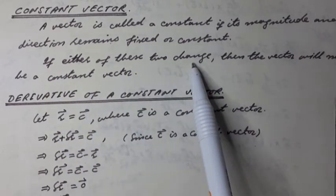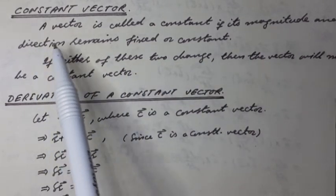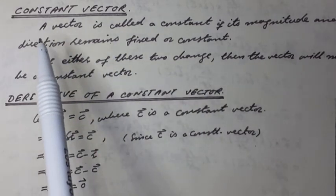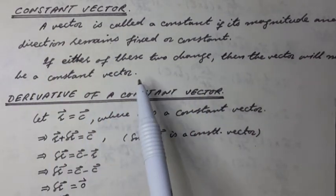If either of these two, that is magnitude and direction changes, then the vector will not be a constant vector.